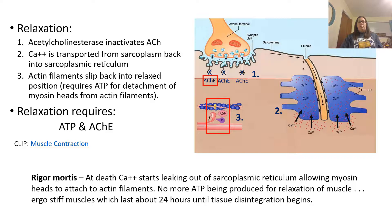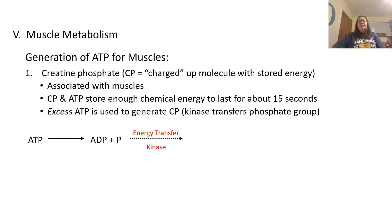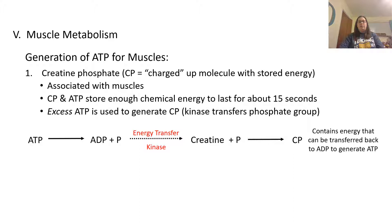Let's talk about muscle metabolism. Muscles require a huge amount of chemical reactions, specifically in the formation of ATP. The generation of ATP in muscle uses creatine phosphate (CP), a charged molecule with a lot of stored energy found only in our muscles. Creatine phosphate and ATP together store enough chemical energy to last about 15 seconds. Excess ATP is used to generate CP through kinase transfer of phosphate groups — ATP is broken down into ADP and phosphate, and a kinase transfers that phosphate to creatine, creating creatine phosphate. This is a reversible reaction allowing the phosphate to be transferred back to ADP to generate more ATP when needed.